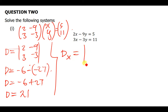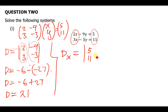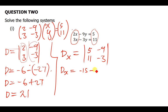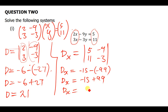Now let us find dx. To find dx we replace the x column with the answer column, putting 5 and 11 there, and keeping the remaining part negative 9 and negative 3. Finding the determinant: 5 times negative 3 is negative 15, minus 11 times negative 9 which is negative 99. So we have negative 15 plus 99, giving us 84.